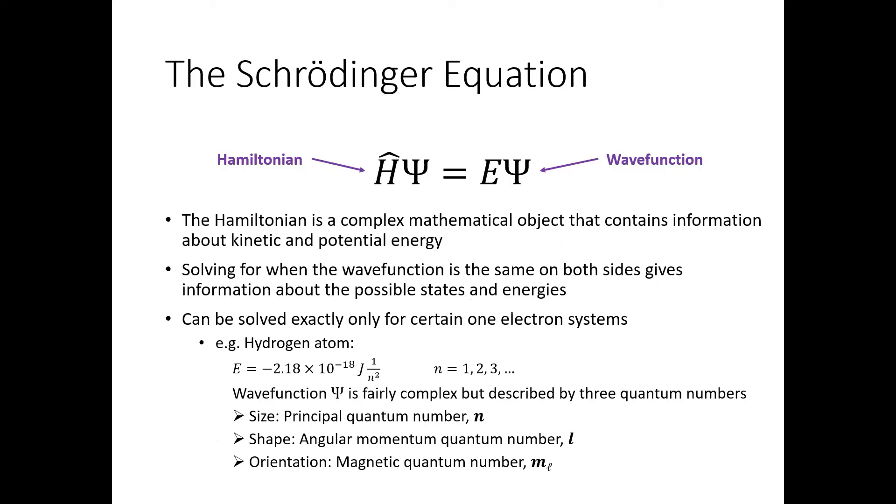So coming back to this Schrödinger equation, the Schrödinger equation can be solved exactly only for some very specific one-electron systems. One of those is the hydrogen atom. The solutions when you solve this equation, you get the wave functions, which tell you about the orbitals or where the electrons are around the atoms, and the energy of those electrons. So in this lab, we're going to be using a program which approximately solves the Schrödinger equation using a method that's known as the self-consistent field method.